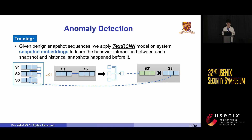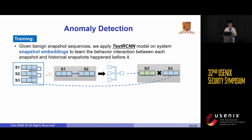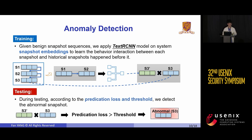With the encoder model, we could convert a snapshot sequence into an embedding sequence and then move on to how to detect anomalies. During training, given a benign snapshot sequence, we apply a temporal RCL model on system snapshot embeddings to learn the behavioral interactions between each snapshot and the historical snapshots that happened before it. For example, given snapshot sequence S1, S2, S3, we take S1 and S2 as input and minimize the prediction loss between predicted S3 and ground truth S3. Then during anomaly detection, ProGrapher takes as input the snapshot sequence and the follow-up snapshot, which can either be benign or malicious, and runs the model to compute the prediction loss. If the prediction loss is below the threshold, ProGrapher considers it to be benign; otherwise, it is abnormal.